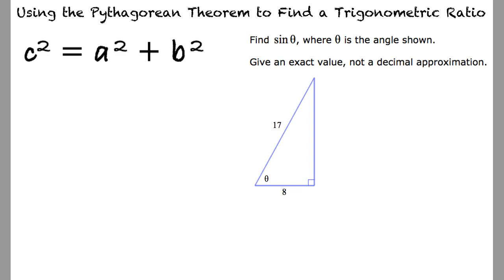We can start by identifying the hypotenuse and the adjacent side, since these two values are given in the diagram. The hypotenuse equals 17, and the adjacent side equals 8.